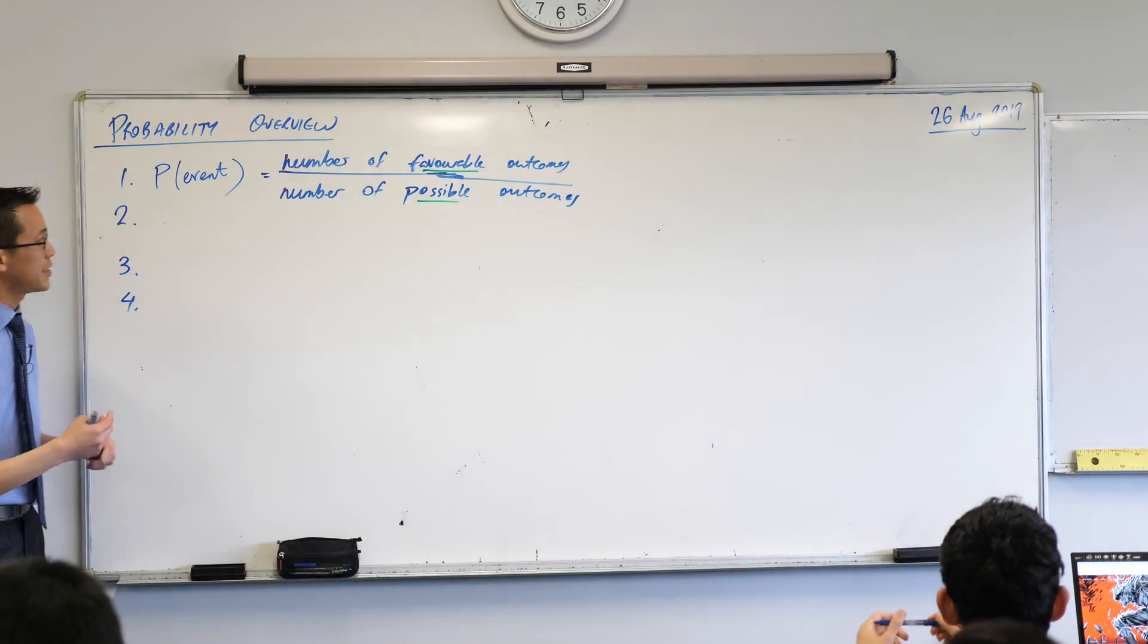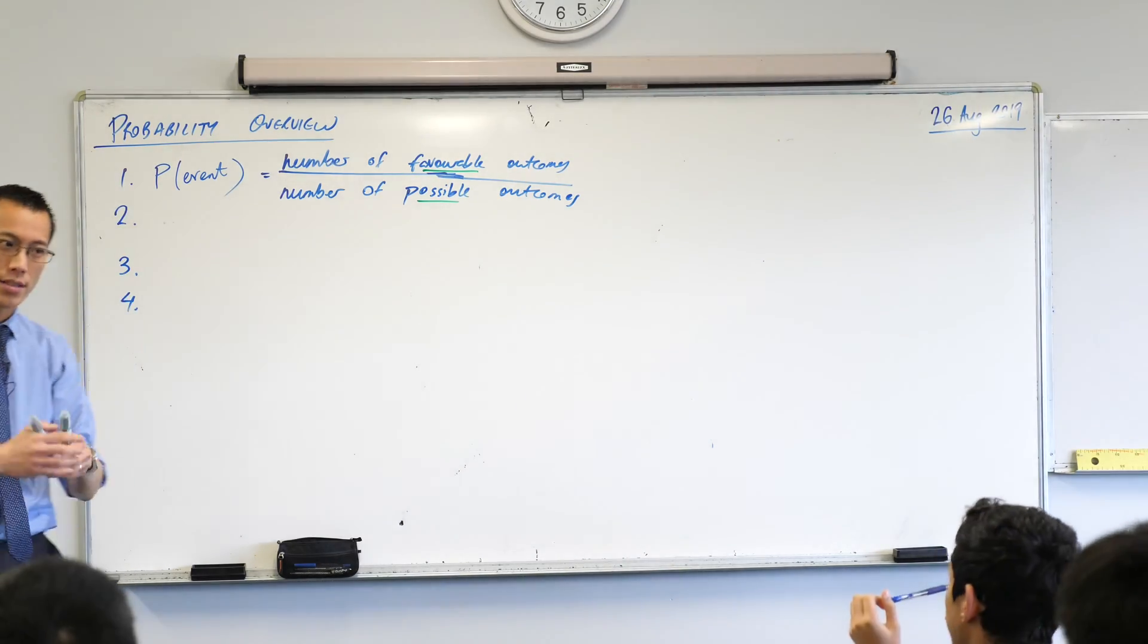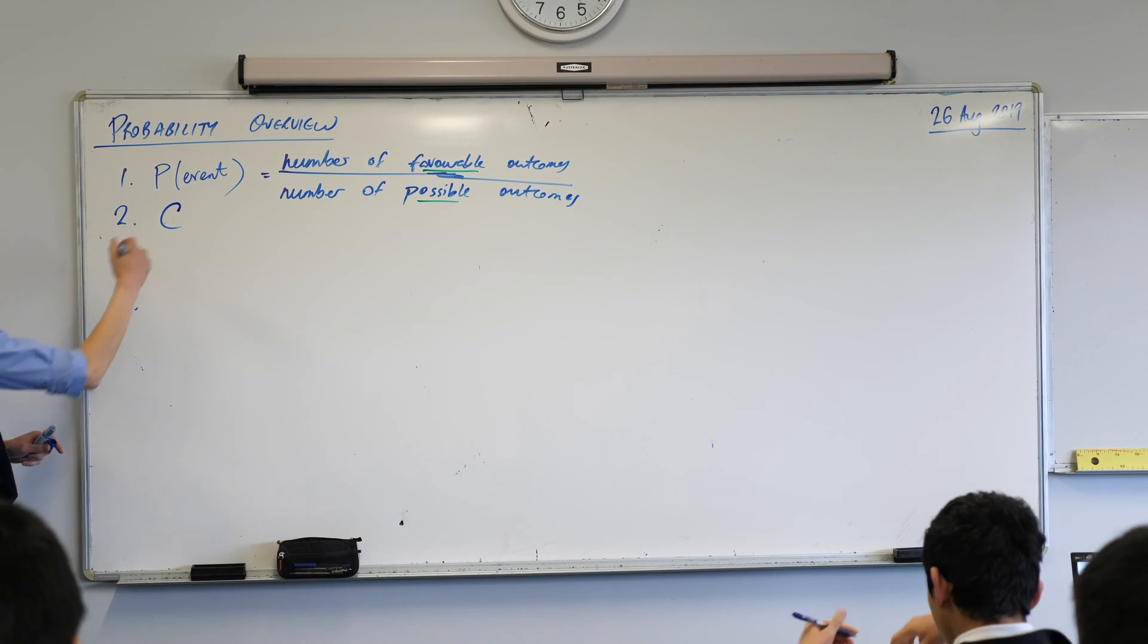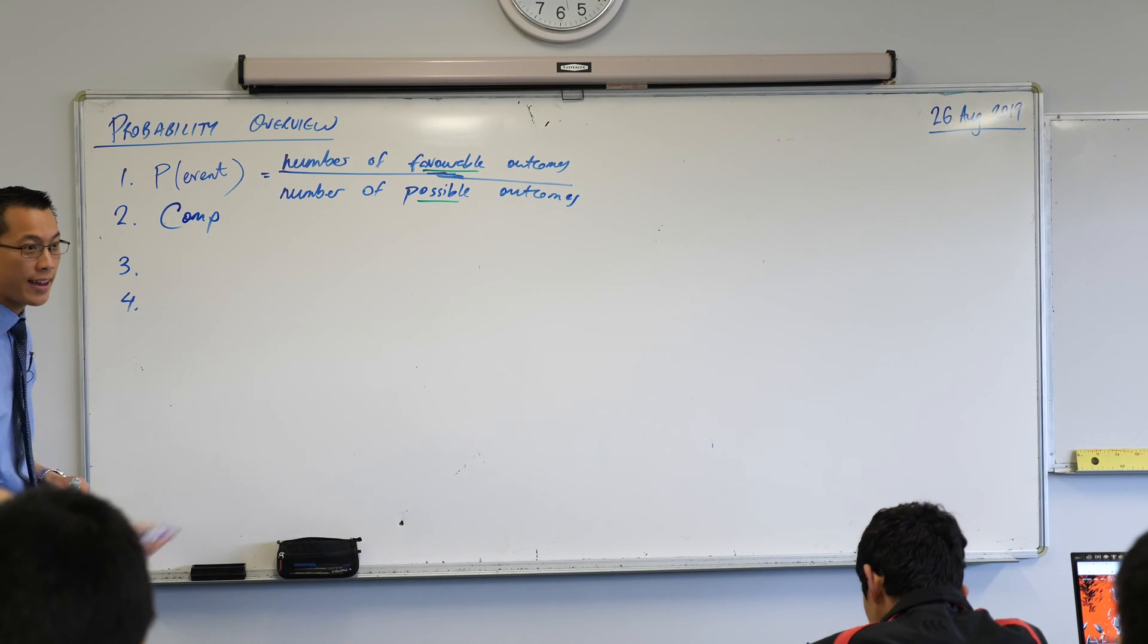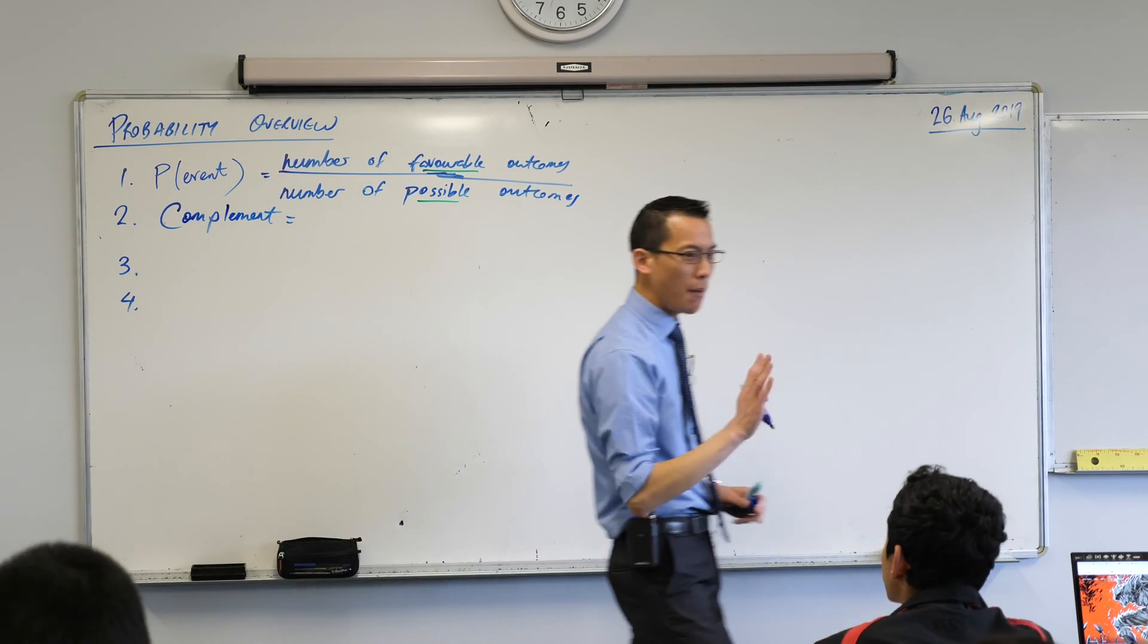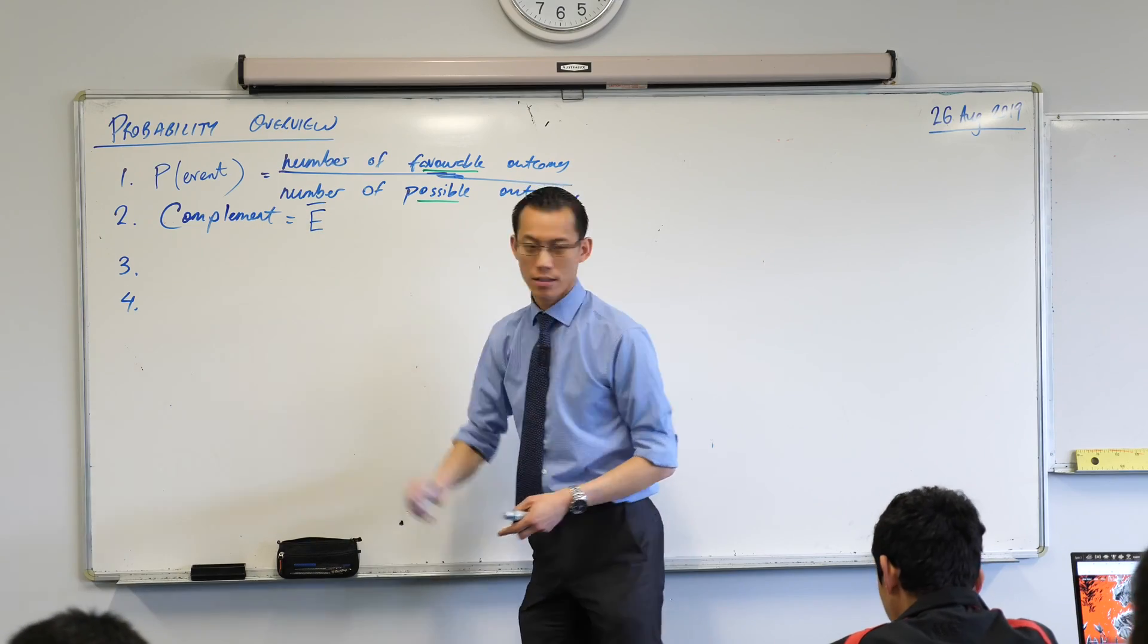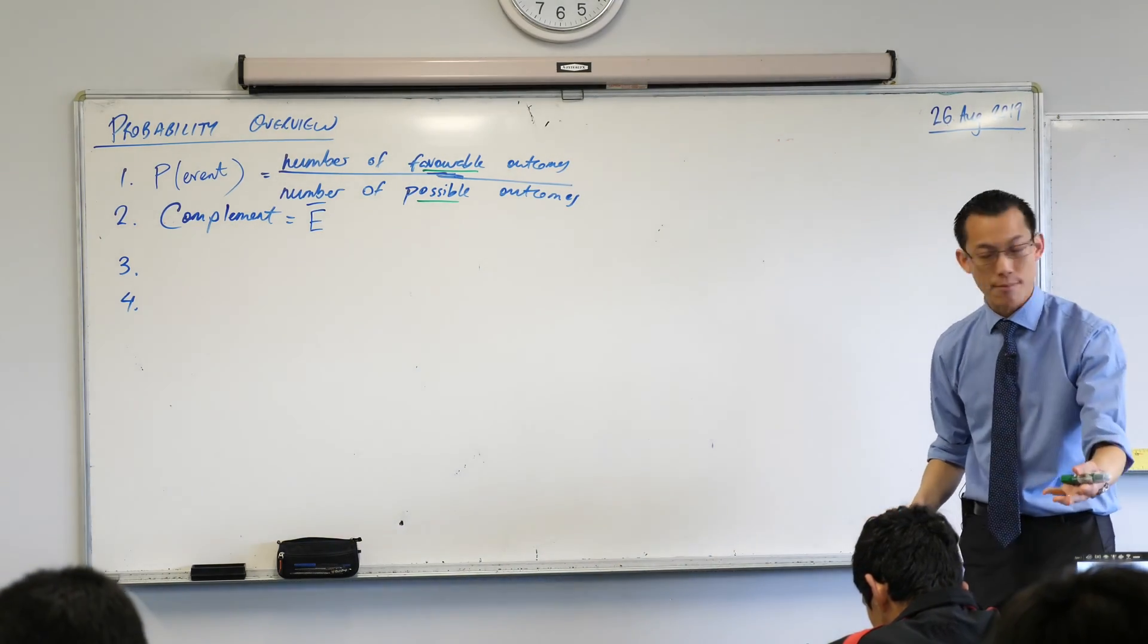The second big idea was we said some events can combine together with others. They're kind of like two sides of the same coin and we called that a word starting with C. Does anyone remember? Complement. Thank you. And we remembered it's a bit tricky. You spell the complement not with an I but with an E. Otherwise you're just saying hey you did a great job. Now the complement we would say if you've got some event E then the complement we would write as an E with a bar over the top or you can just say not E or you could name what the complement was.